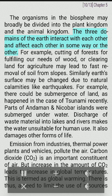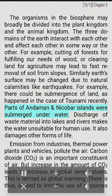The three domains of the Earth interact with each other and affect each other in some way or the other. For example, cutting of forests for fulfilling our needs of wood, or clearing land for agriculture may lead to fast removal of soil from slopes. Similarly, Earth's surface may be changed due to natural calamities like earthquakes. For example, there could be submergence of land, as happened in the case of the tsunami recently. Parts of Andaman and Nicobar Islands were submerged underwater. Discharge of waste material into lakes and rivers makes the water unsuitable for human use and damages other forms of life. Emission from industries, thermal power plants and vehicles pollute the air.